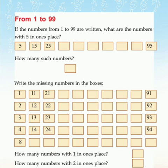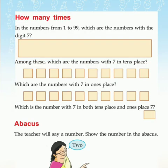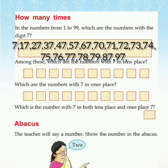Now, how many times does the digit 7 appear in numbers from 1 to 99? Which are the numbers with the digit 7? So you want to write all numbers in which 7 comes — 7, 17, 27, 37, 47, and like that.